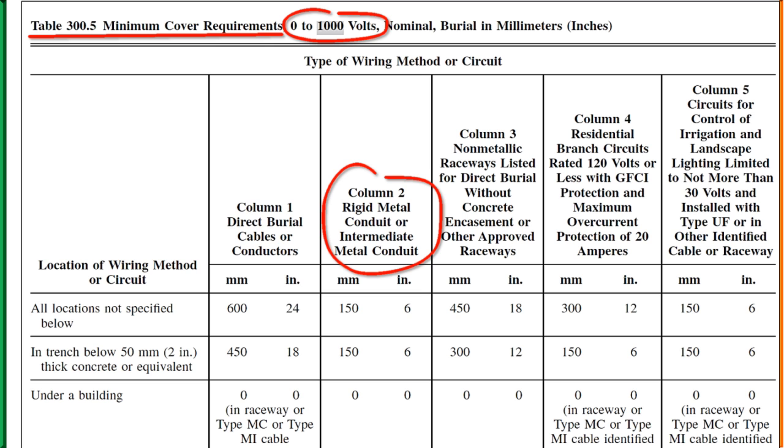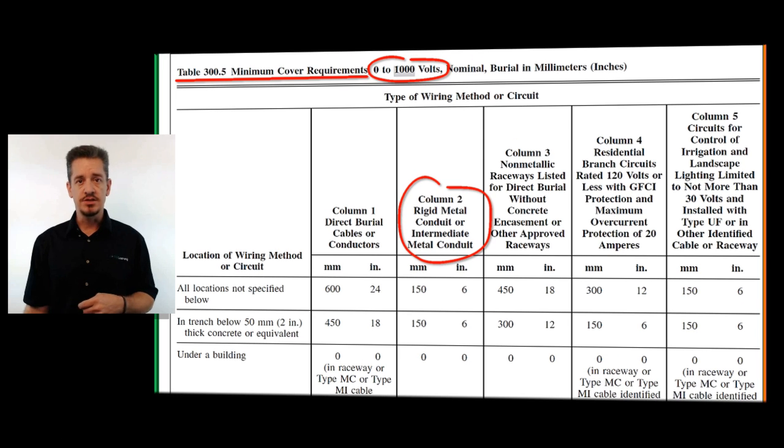Look at column two. Rigid metal conduit or intermediate metal conduit. Does it say anywhere in column two, rigid metal conduit or intermediate metal conduit with wires in it? No, it does not. Most of the dimensions in that column are going to say six inches. There's one in there that says four inches.